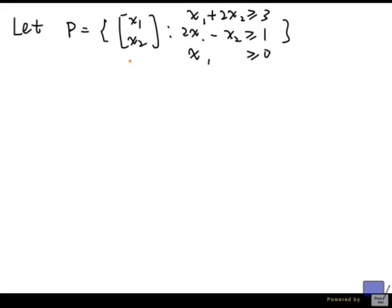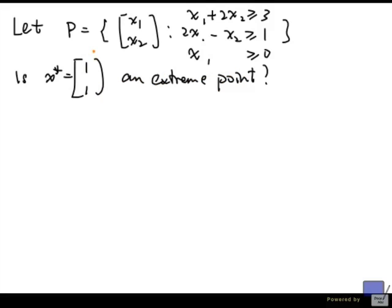So let P be this set. Is x star equal to 1, 1 an extreme point? Well clearly, you can try to graph this and do this graphically, but we're not going to do that.